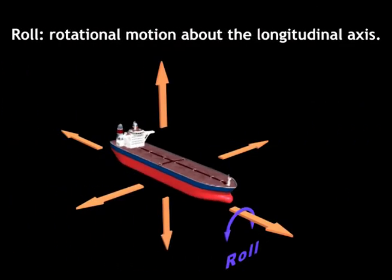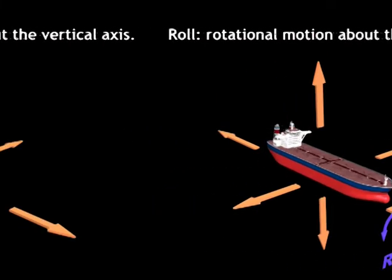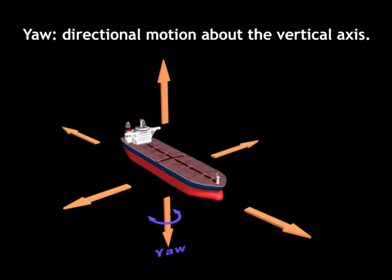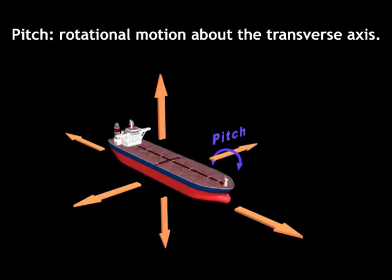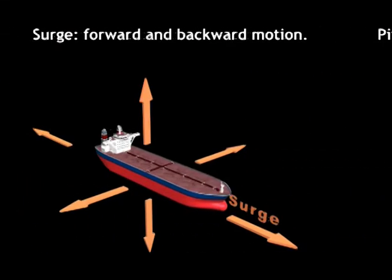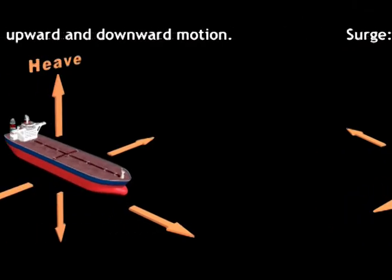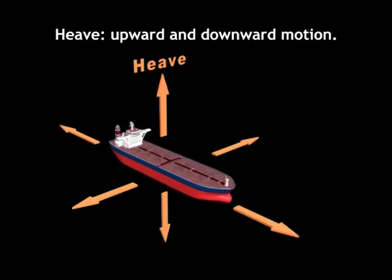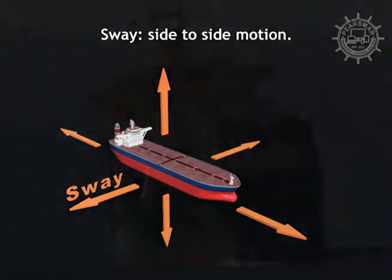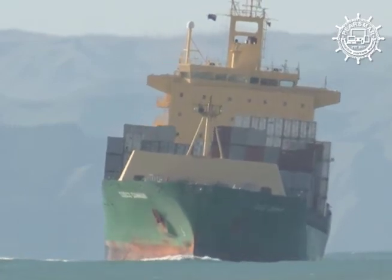Roll is the rotational motion of a vessel about her longitudinal axis. Yaw is the directional motion of a vessel about her vertical axis. Pitch is the rotational motion of a vessel about her transverse axis. Surge is the forward and backward motion. Heave is the upward and downward motion. Sway is the sideward motion. Some of these motions can occur independently, but they usually occur in any combination.